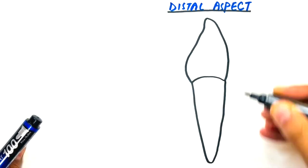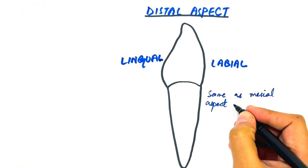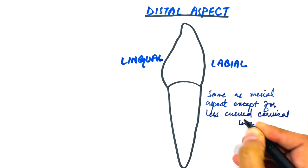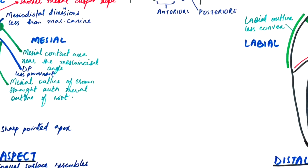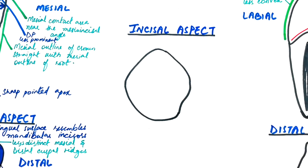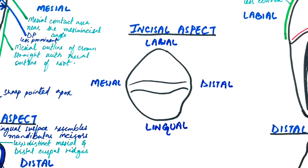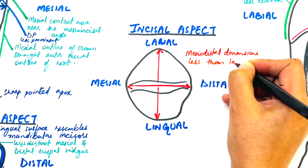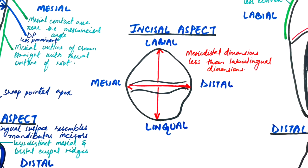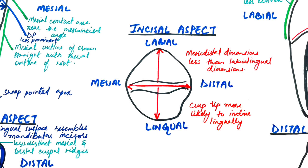From the distal aspect, the tooth is same as the mesial aspect except for the less curved cervical line. From the incisal aspect, the mesial distal dimension is less than the labial lingual dimension of the crown. The cusp tip is more likely to be inclined lingually. However, the cusp tip in maxillary canine is inclined labially.